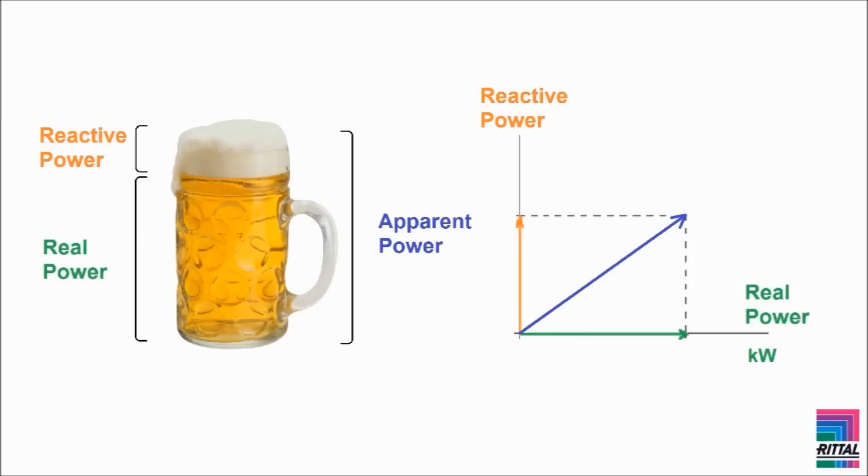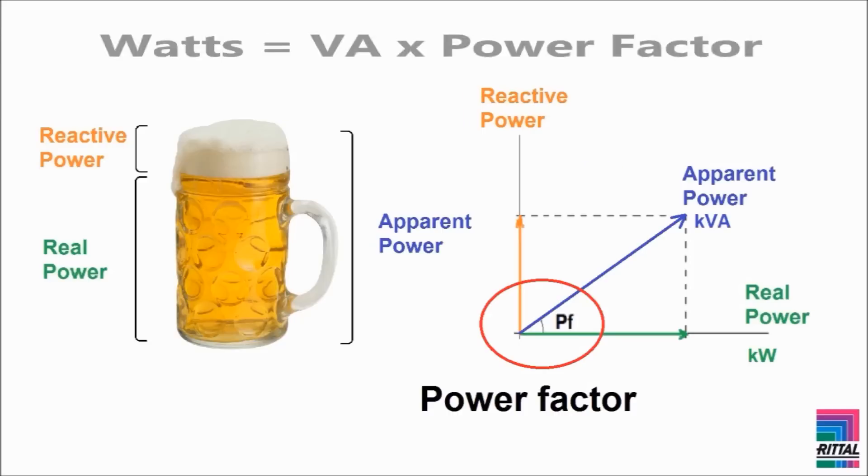The angle between the apparent power and the horizontal axis is called the power factor. The relationship between volt amps and watts is described by a simple formula: Watts equals volt amps times by the power factor, pf.